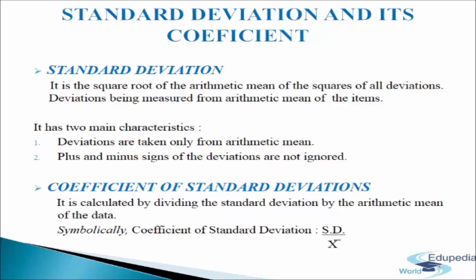Next we come to the coefficient of standard deviation. It is the relative measure of dispersion, used to compare variation of two or more distributions expressed in different units. The coefficient of standard deviation is calculated by dividing the standard deviation by the arithmetic mean of the data. Symbolically, coefficient of standard deviation = SD divided by mean.